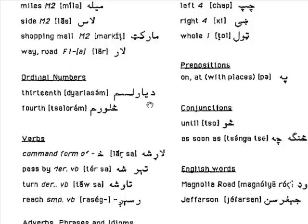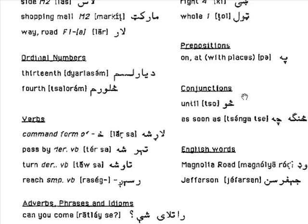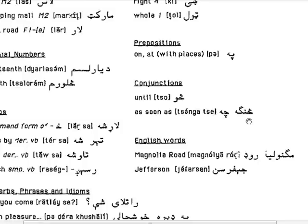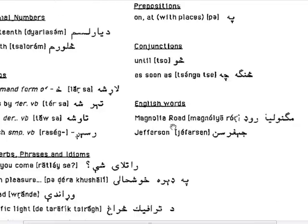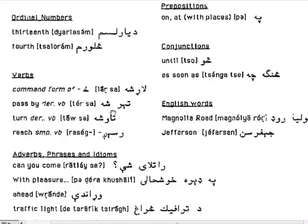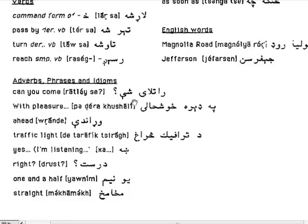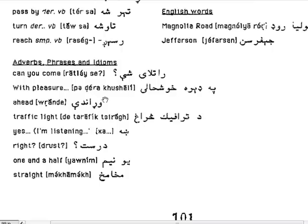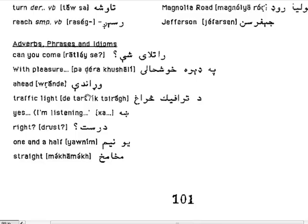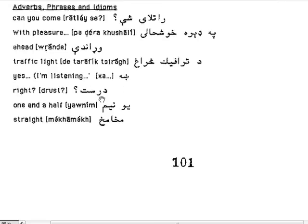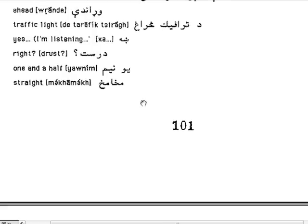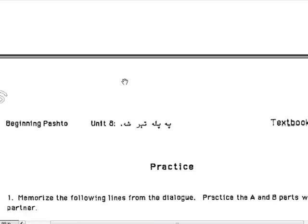Prepositions: pa means on, at, or with places. Ordinal numbers: diarlasum means thirteenth; salurum means fourth. Conjunctions: so means until; singa chee means as soon as. English place names used: Magnolia Road and Jefferson. Command forms: larshah means go; pass by — tearshah; turn means taoshah; reach means raseig. Phrases and idioms: ratlaiche means can you come; padera khushali means with pleasure; urande means ahead; de tarafik sarakh means traffic light; khah means yes; drust means right; yonim means one and a half; machamach means straight.